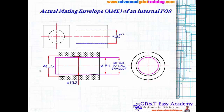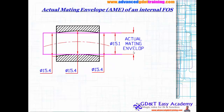Looking at the internal condition, this is the virtual condition and the actual mating envelope. Here the maximum size deviation is 15 plus 0.5. The mating envelope is the best fitting condition where you satisfy contact at various high points and the internal feature fits your part. Another condition at 14.4 at different points — even if you have a wavy curved part — it still fits inside your counterpart. This is your counterpart and this is your actual designed part.